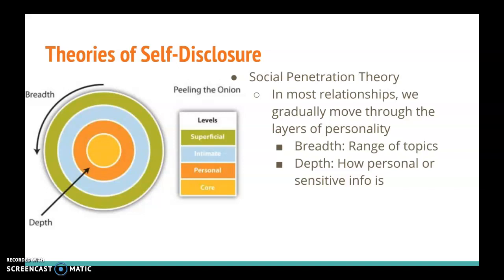Social penetration theory also argues that people in a relationship balance needs that are sometimes in tension. These needs are the need for openness and the need for closedness. We often want to make ourselves open to others through self-disclosure, but we also want to maintain a sense of privacy at the same time. So this need to be open and this need to be closed are often in tension with one another, pulling us in multiple different directions.